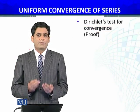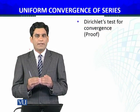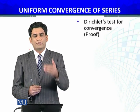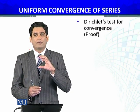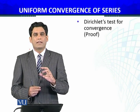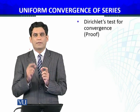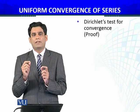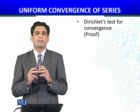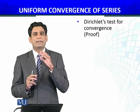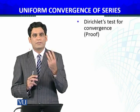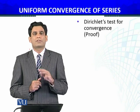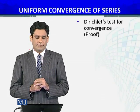So you have seen that with the same idea that we used in Analysis 1 for the Dirichlet test, we have used the same approach here and proved that the series of functions — summation n equals k to infinity of fn·gn — is uniformly convergent under certain conditions, which we stated and proved using the Dirichlet test.